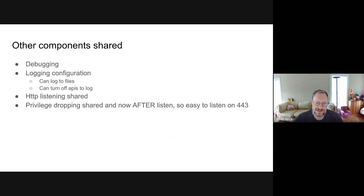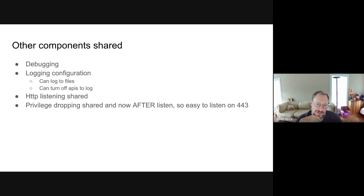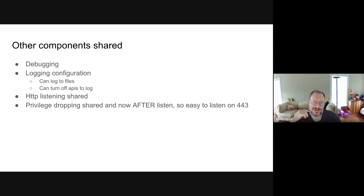Most excitingly, the dropping of privileges — that's the drop user and drop group part — is now done after the listen. Previously it was very hard to listen on port 443. If you wanted to listen on ports below 1,024, you either had to do some port redirection or remove the privilege dropping. Now we've moved the privilege dropping to after the listen, so you can listen on any port with no problem. Also, certificate reloading and monitoring is now all the same across all of our tools.